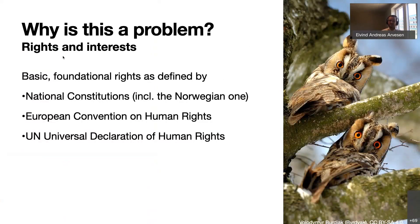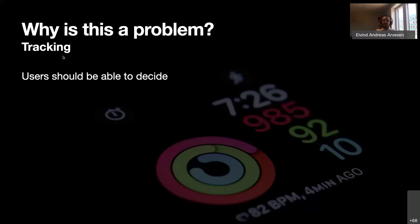Privacy is a basic foundational right, defined and guaranteed by national constitutions, the European Convention of Human Rights, and the UN Universal Declaration of Human Rights. Users should really be able to decide for themselves. You could want to share data in a limited scope under certain circumstances with some parties to perhaps gain some value in return. But fingerprinting is happening without users' knowledge or consent, and that's a problem.